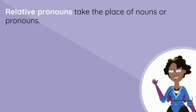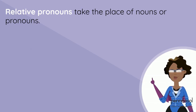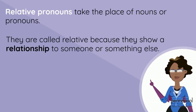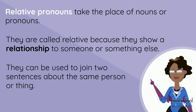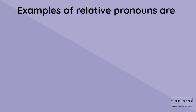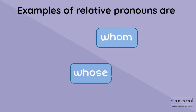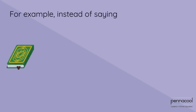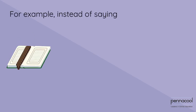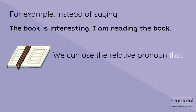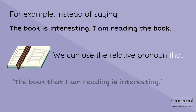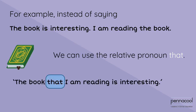Relative pronouns take the place of nouns or pronouns. They are called relative because they show a relationship to someone or something else. They can be used to join two sentences about the same person or thing. Examples of relative pronouns are whom, whose, which, and that. For example, instead of saying the book is interesting, I am reading book, we can use the relative pronoun that. So we say, the book that I am reading is interesting.